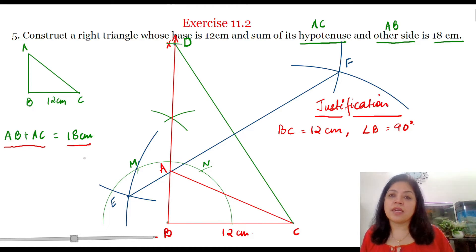And we need to prove that AB plus AC is equal to 18 cm that is the sum of its hypotenuse and the other side is 18 cm. We know that the vertex A lies on the perpendicular bisector EF. Therefore A will be at equal distance from D and C. So we can say that AD is equal to AC and from the figure we can also say that BD is equal to AB plus AD.